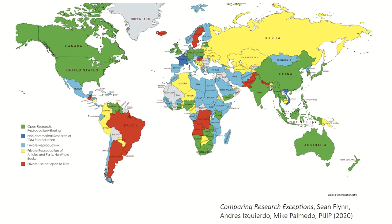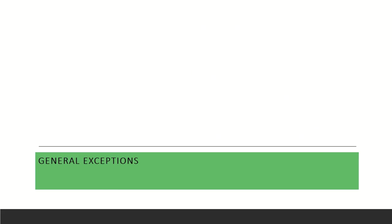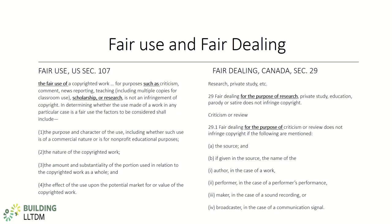Let's turn to the different varieties of user rights I label collectively as green. The first category is general exceptions — those that apply a single balancing test like fairness to a group of different purposes, either open like fair use or that mentions research specifically. The primary type of general exception is often referred to as fair use or fair dealing. General exceptions are most common in, but not exclusive to, countries from the common law tradition evolving from the United Kingdom. Such exceptions often provide a general defense for fair use or fair dealing with respect to any protected use by any user of any work.